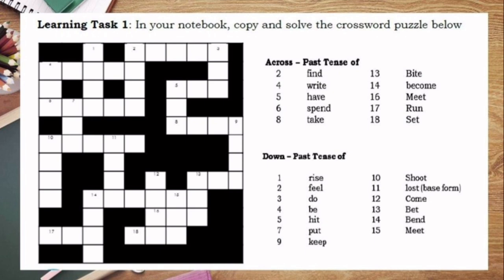For learning task number 1, the instruction is: in your notebook, copy and solve the crossword puzzle below. You're going to copy the given crossword puzzle and the answers should be the past tense form of the following verbs. For across, for example in number 2, we have 'find.' So you're going to identify the past tense form of the verb find.